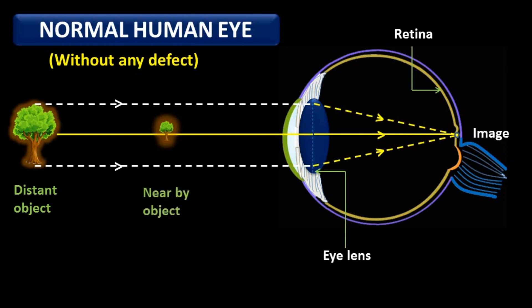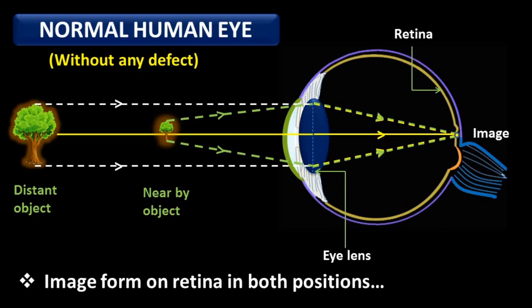For a nearby object, close to the human eye, rays coming from the nearby object also converge correctly on the retina and the image is formed on the retina. In both conditions — distant and nearby — rays coming from the object, after refraction, meet on a single point on the retina. This image is a clear image.